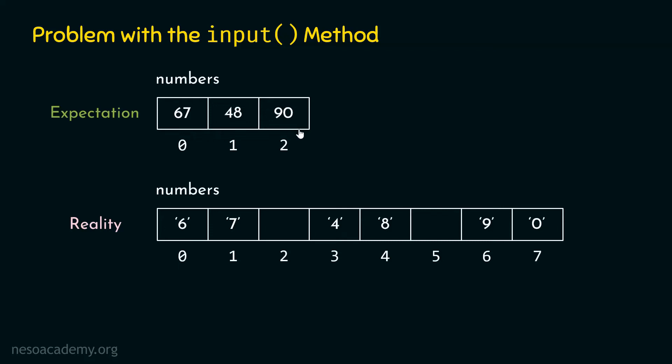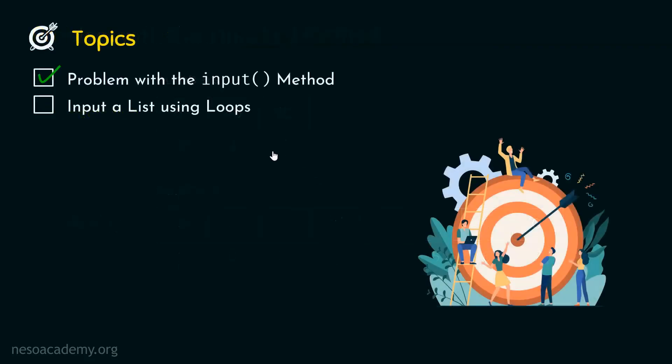We don't want a list of eight character items. We want a list of three items with values 67, 48 and 90. To get this, we need to use loops — that is our next topic: inputting a list using loops.